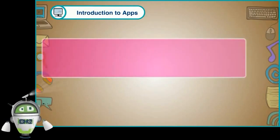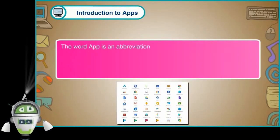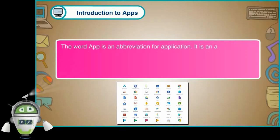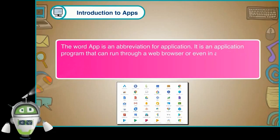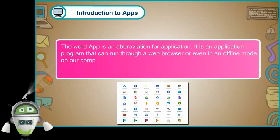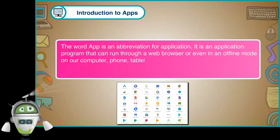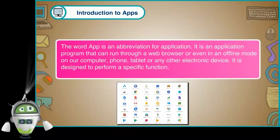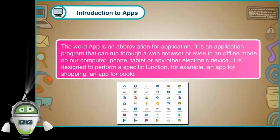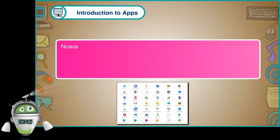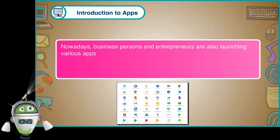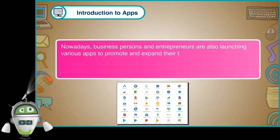Introduction to Apps. The word app is an abbreviation for application. It is an application program that can run through a web browser or even in an offline mode on our computer, phone, tablet or any other electronic device. It is designed to perform a specific function. For example, an app for shopping, an app for booking film tickets, etc. Nowadays, business persons and entrepreneurs are also launching various apps to promote and expand their business ventures.